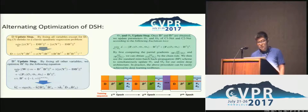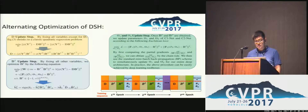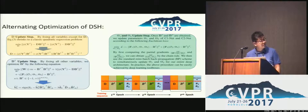We then propose an alternating optimization-based algorithm, which sequentially updates binary codes and deep hash functions in a fast way, as shown in the figure.